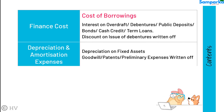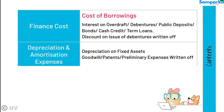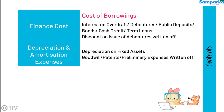Depreciation and amortization expenses includes depreciation on fixed assets. Goodwill, patents, and preliminary expenses written off are also shown under this head.